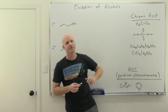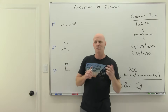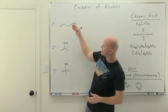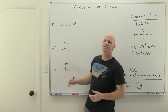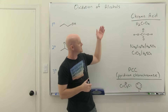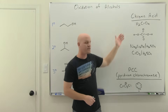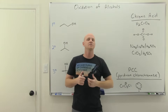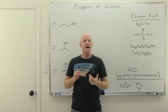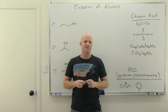The oxidation of alcohol is going to be the topic of this lesson, and we're going to go through the difference in oxidizing primary, secondary, and tertiary alcohols. We'll talk about two major oxidizing agents for alcohols, chromic acid and PCC. And at the end, we'll even take a little time out to talk about the mechanism, which some of you will be on the hook for.